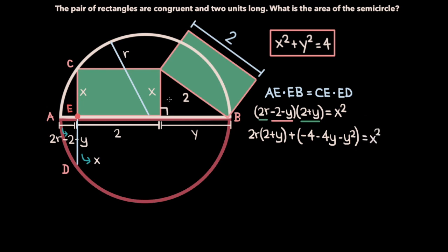Now recall we determined that x squared plus y squared equals 4, and to take advantage of this equation, let's add y squared to both sides, so we have x squared plus y squared on the right-hand side of our equation. If we do so, the minus y squared term on the left-hand side disappears, and so we have 2R times 2 plus y plus negative 4 minus 4y equals x squared plus y squared. We know x squared plus y squared is equal to 4, because we applied the Pythagorean theorem on this triangle, so what we have is 2R times 2 plus y minus 4 minus 4y equals 4, because x squared plus y squared equals 4.